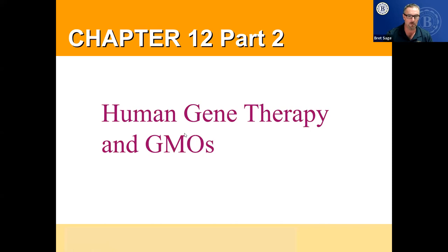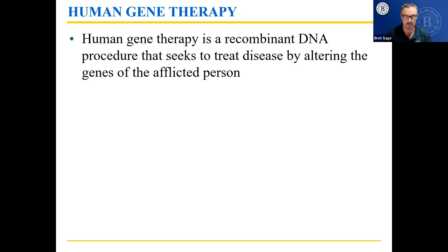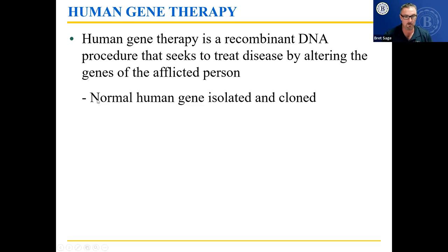Human gene therapies and GMOs. Human gene therapy is a procedure that seeks to treat disease by altering the genes of the afflicted person. There are many traits in the human genome that are genetic diseases, and theoretically, if you took out the genes of the person who's suffering and put in healthy genes in their place, they would no longer have that genetic disease. The normal human gene is isolated and cloned so you get lots of copies.